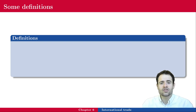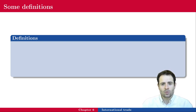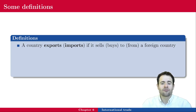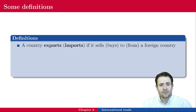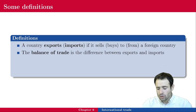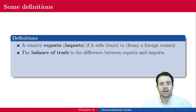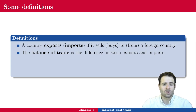Before getting into empirical facts, let's cover some basic definitions. A country exports if it sells to a foreign country; it imports if it buys from a foreign country. So if Canada sells something to the US, that's an export; if Canada buys something from the US, that's an import. The balance of trade is the difference between exports and imports. A positive balance means a country exports more than it imports.